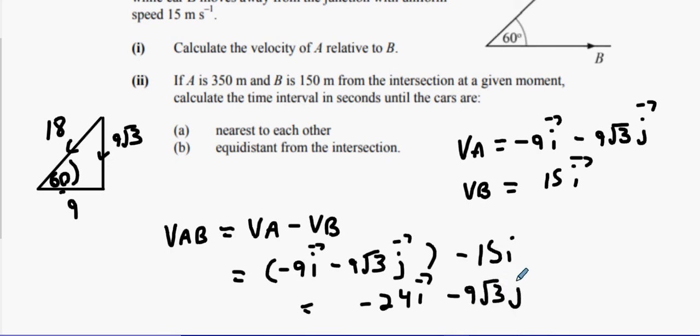So I believe I'm going to get minus 24i minus 9 root 3 j, which is across and down. So across at 24, down at 9 root 3. So I suppose I can call tan x equals 9 root 3 over 24.